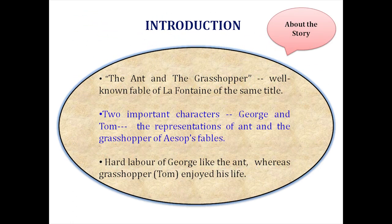Maugham's story, The Ant and the Grasshopper, bases itself on the well-known fable of La Fontaine of the same title. In this short story, the author presents two important characters, George and Tom. They are the presentations of the Ant and the Grasshopper of Aesop's Fables. Maugham has shown the hard labor of George, like the Ant, who paid only modestly, whereas the singing grasshopper, Tom, enjoyed his life through crafty means luxuriously.